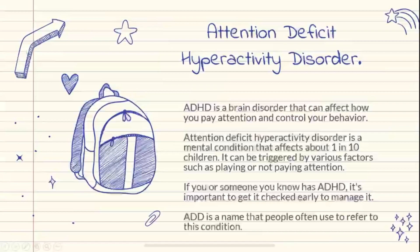ADHD, also known as attention deficit hyperactivity disorder, is one of the most common neurodevelopmental disorders of childhood. It is usually first diagnosed in childhood and often lasts into adulthood. ADHD is a brain disorder that can affect how you pay attention and control your behavior. It is a mental condition that affects about 1 in 10 children.